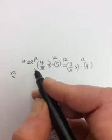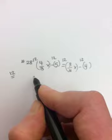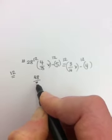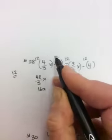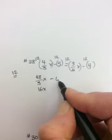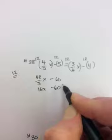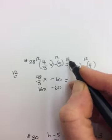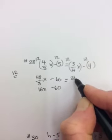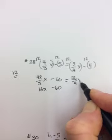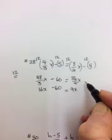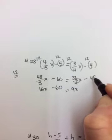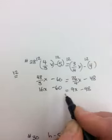So if we multiply everything by 12, 4 times 12 is 48 over 3. And 48 over 3 is 16x. You've got to do the 5 times 12. So 5 times 12 is 60. So this will be minus 60. 3 times 12 is 36. So this is 36 over 4x. But 36 over 4 is really 9. And then minus 4 times 12 is 48. So minus 48.